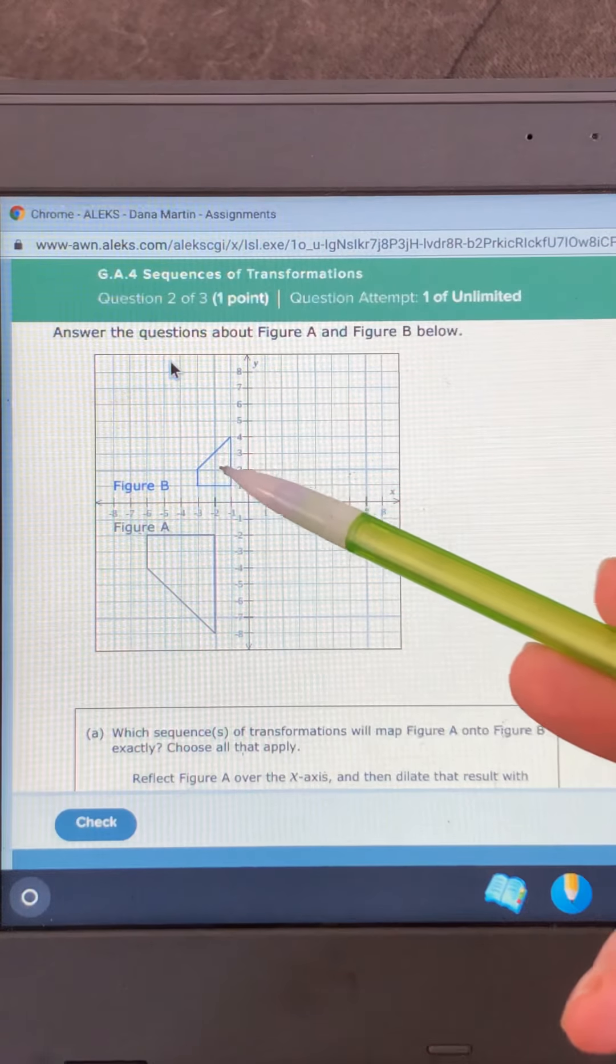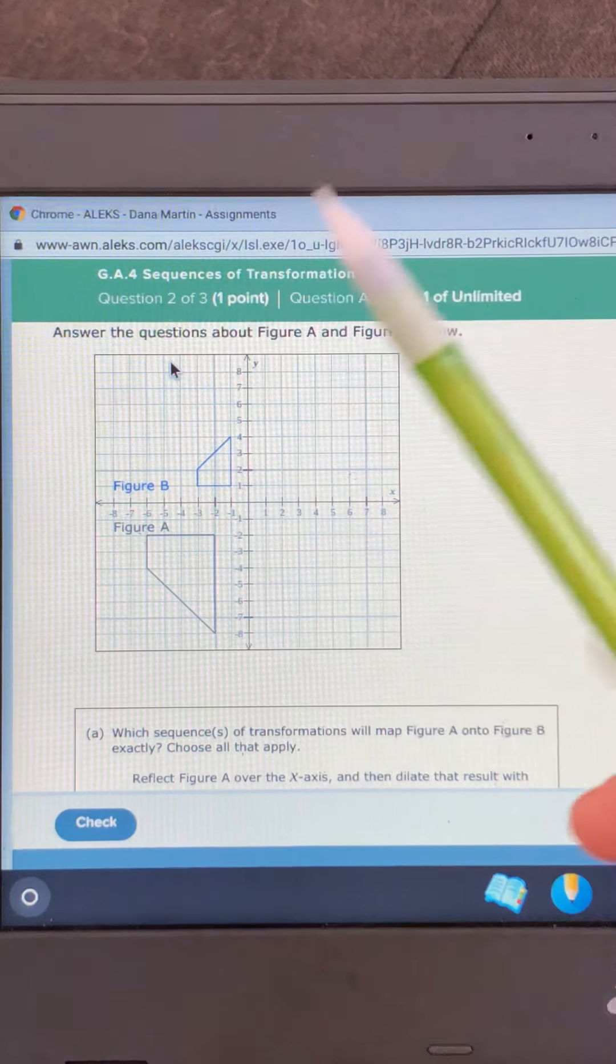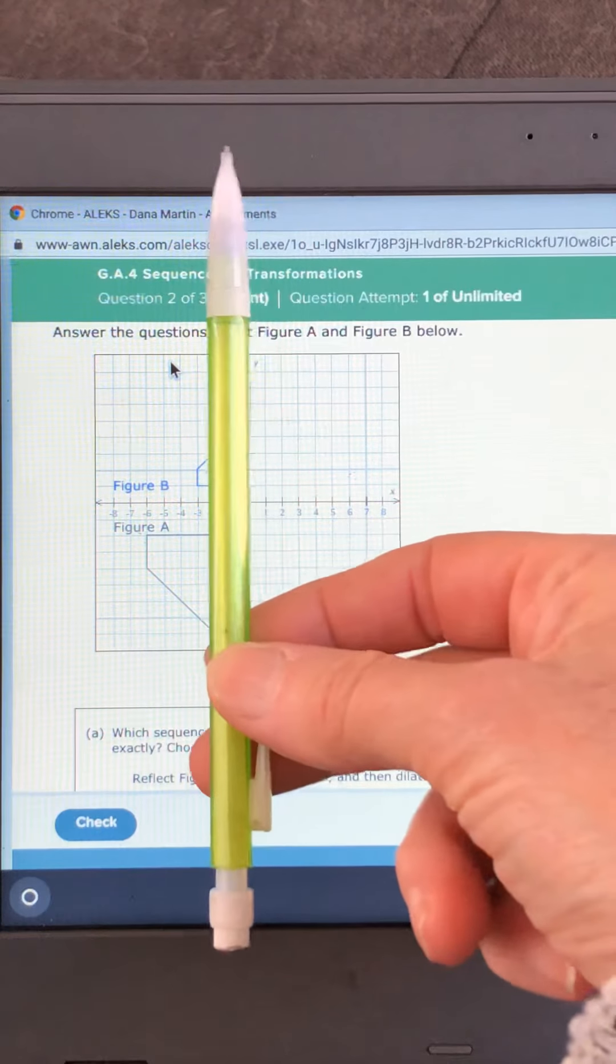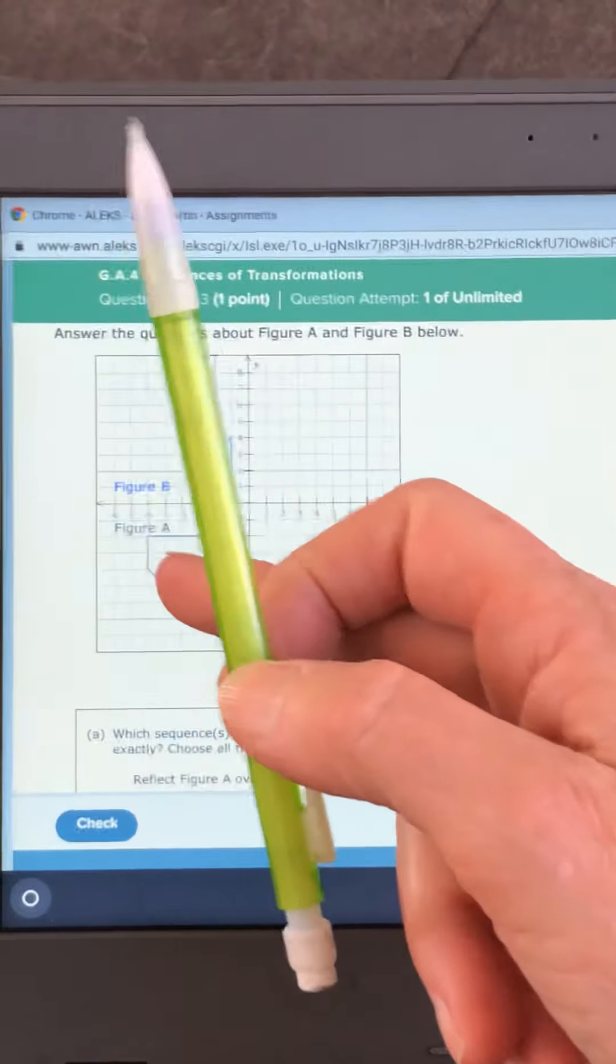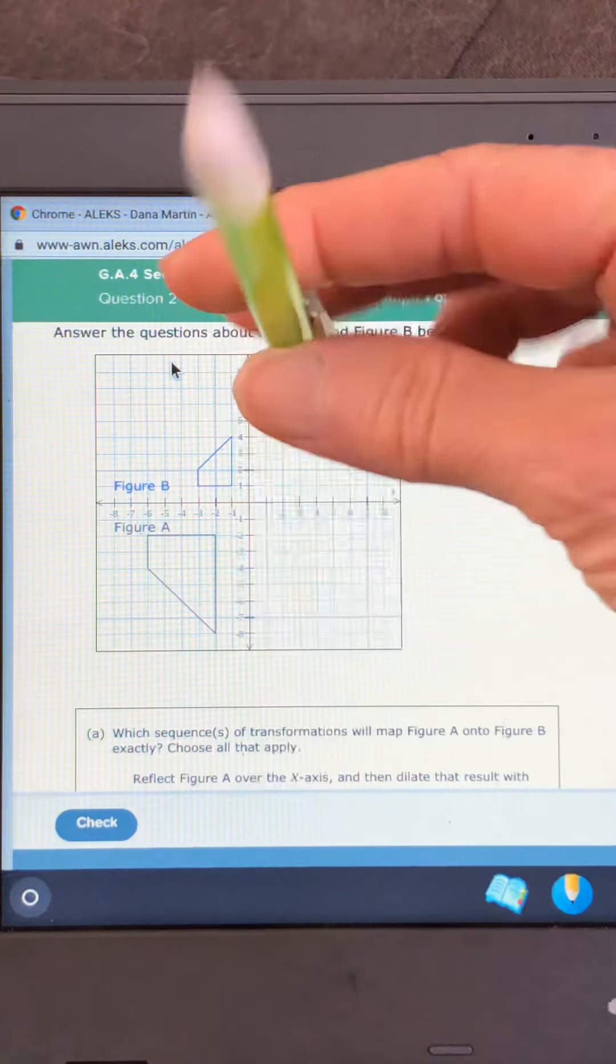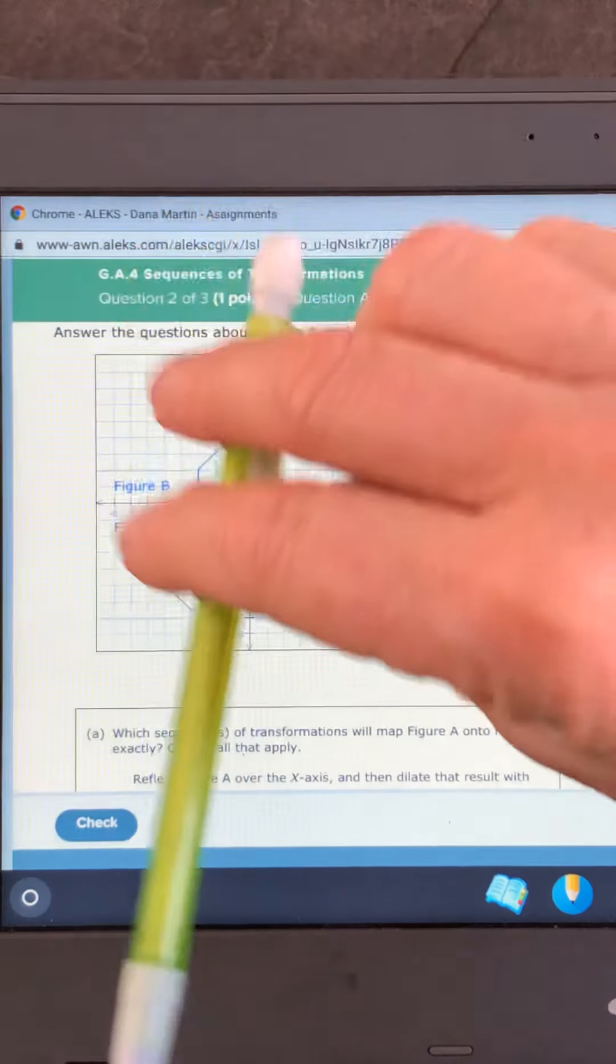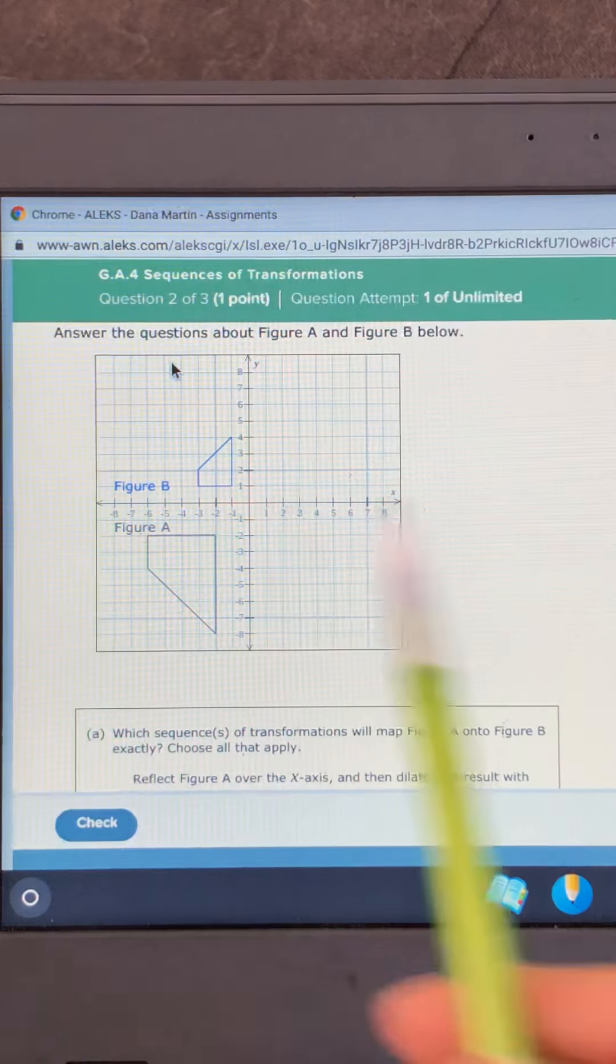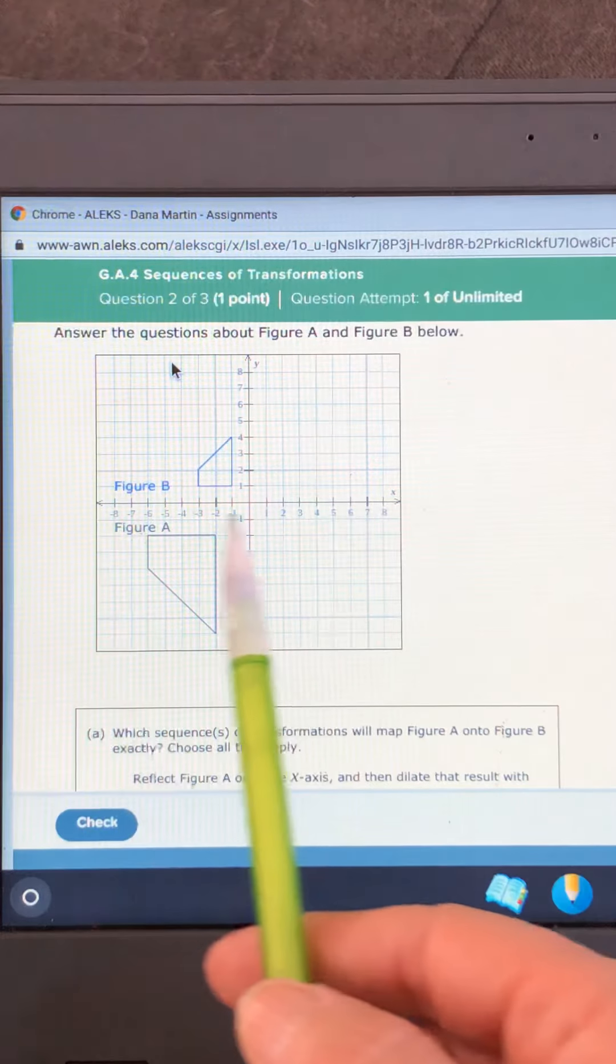We know the scale factor is going to be less than one. And also, you see where it's pointing up? If we were to rotate it to get to that quadrant, it would have to turn. And it's not. It's completely facing down. Look what I'm doing with my pencil. If it's facing down, that's a reflection. Over which axis? The x-axis.